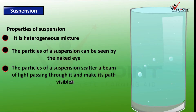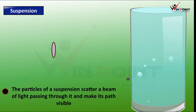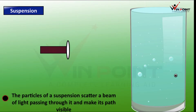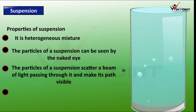The particles of suspension scatter a beam of light passing through it and make its path visible. When light passes through the suspension, it undergoes multiple reflections — that is scattering. We can see the path of light, which is known as the Tyndall effect. Here, when we switch on a torch through a chalk powder and water suspension, we can see the path of light because of scattering.